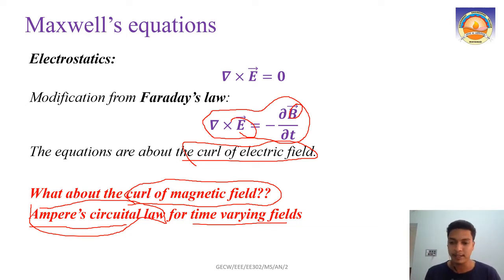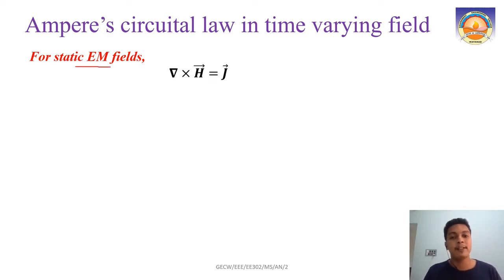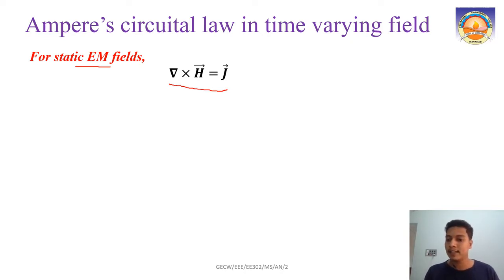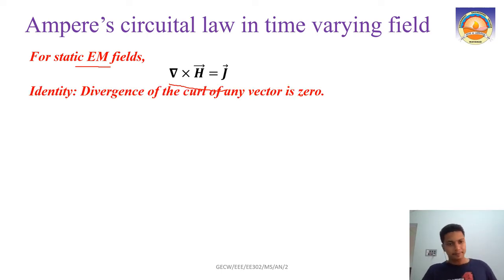For static electromagnetic fields, Ampere's circuit law gives del cross H equal to J. The magnetic field intensity H — its curl equals the current density through a conductor. That is what we learned with the static magnetic field.